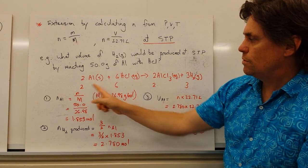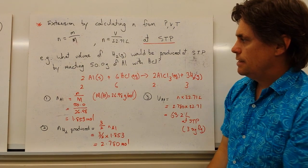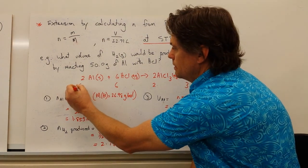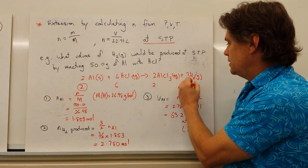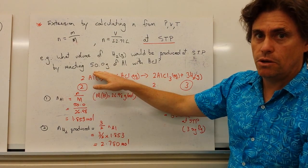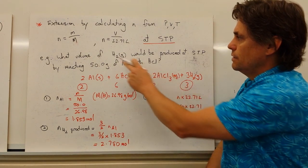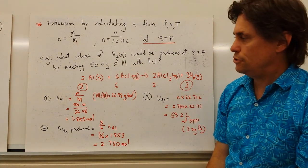So our relationship is two moles, six moles, two moles and three moles. Now the two important ones are this one here and this one here. This is our original reactant and we've been given the number of moles there. And this is the product and we want to find the volume of that product produced.